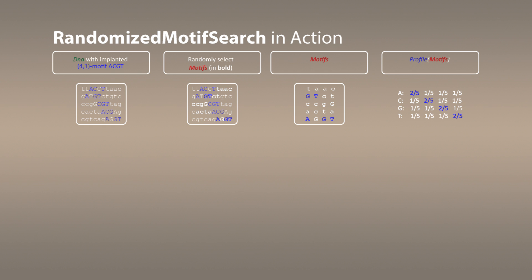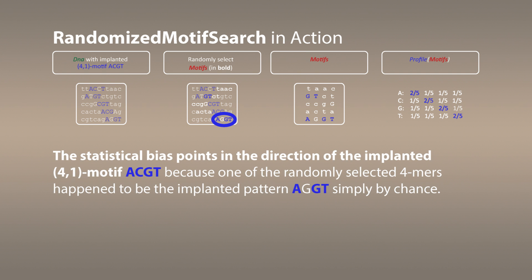If you look at the profile that resulted from this implantation, you see that the largest elements in this profile actually correspond to ACGT of our implanted pattern ACGT. Therefore, even a single correctly found k-mer in the set of DNA strings creates a bias in the profile, and this bias leads us to the correct sequence.